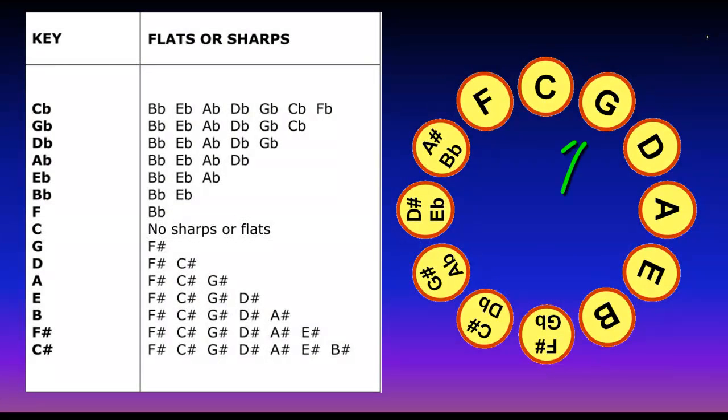And then the key of G is at one o'clock position. It has one sharp, F sharp. For D, there are two sharps. You add the C sharp. For key of A, it is F sharp, C sharp, and G sharp. So you just add an extra sharp to the previous one.